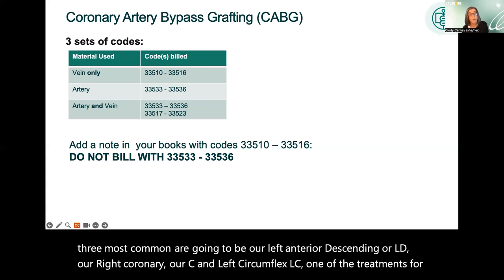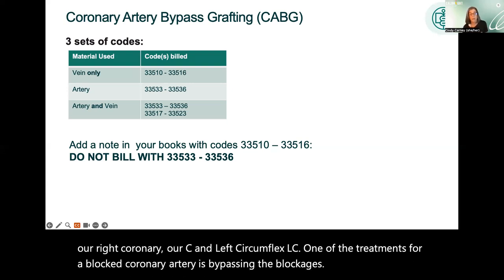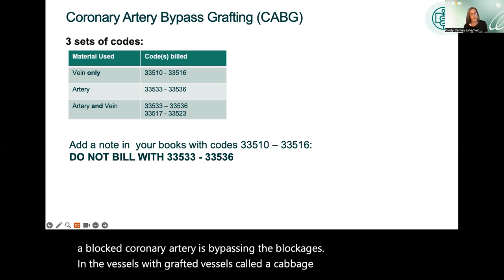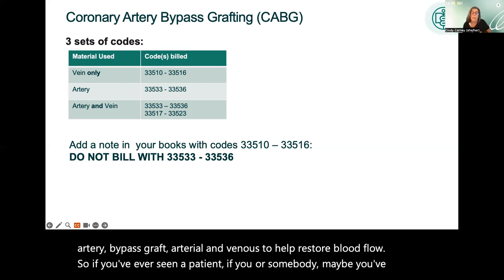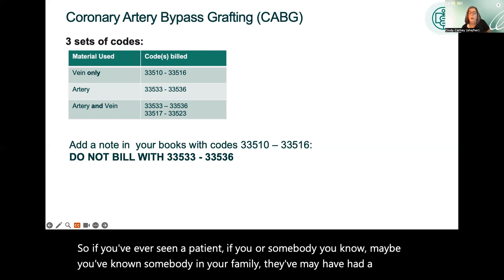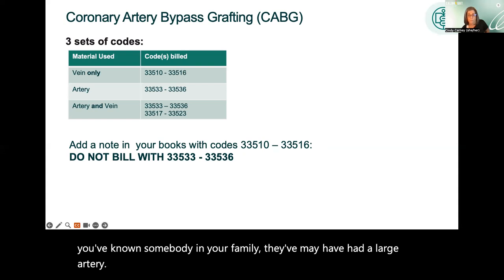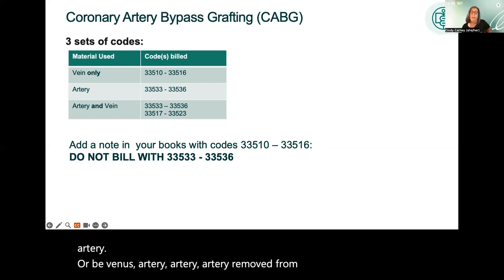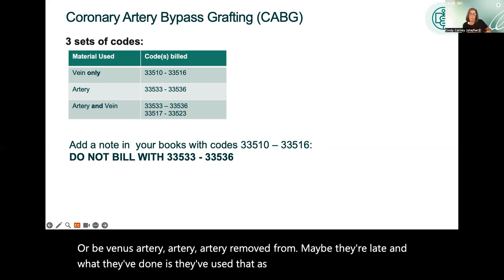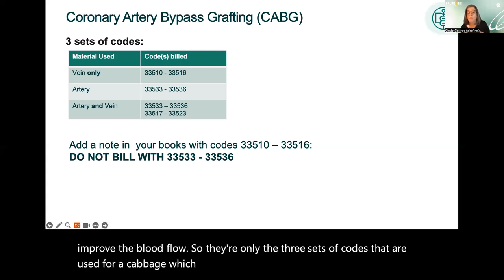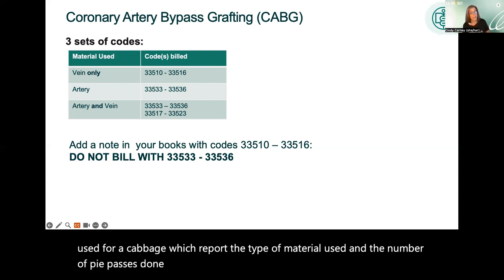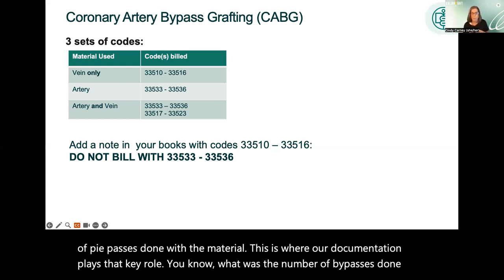One treatment for a blocked coronary artery is bypassing the blockage with a grafted vessel — a CABG. Arterial and venous grafts are used to restore blood flow. A patient may have a large artery or vein removed from their leg, which is then used as a bypass within the heart to improve blood flow. There are only three sets of codes used for a CABG, reporting the type of material used and the number of bypasses done. Documentation must capture the number of bypasses performed and the type of material used.